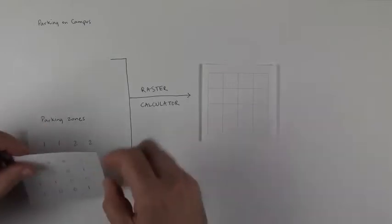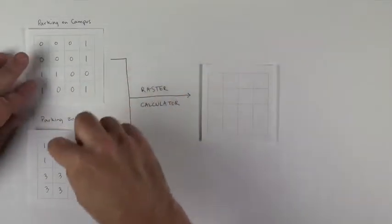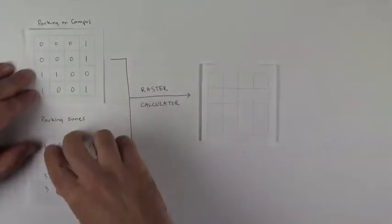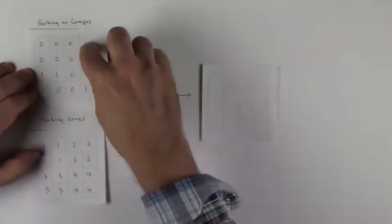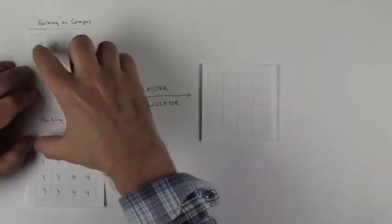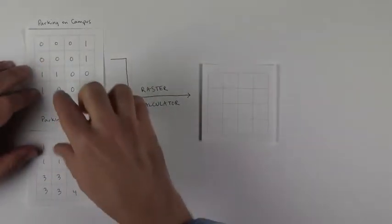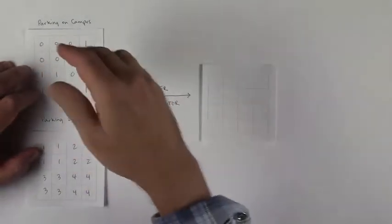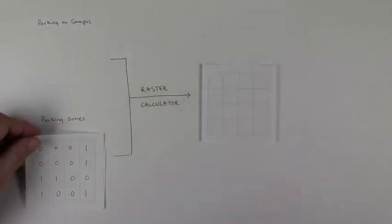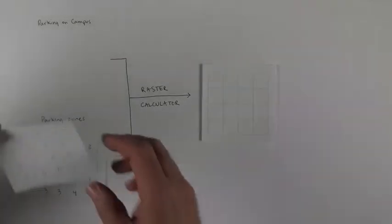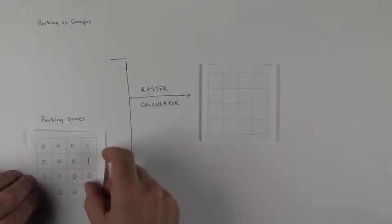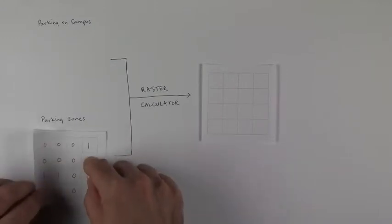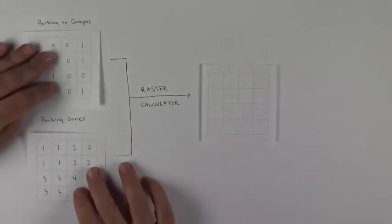So what that allows us to do is for each cell, we can compare the values and perform some kind of an operation based on the values at each location across a stack of layers. Does that make sense? So it's kind of an overlay. We're laying these on top of each other. We're going to compare or work with the numbers that share the same location, just in different layers.